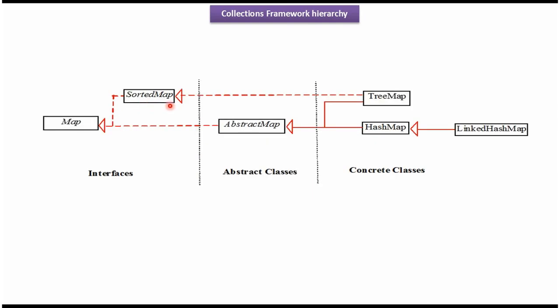SortedMapInterface extends MapInterface. AbstractMapClass implements MapInterface. TreeMapClass implements SortedMapInterface and extends AbstractMapClass. HashMapClass extends AbstractMapClass. LinkedHashMap extends HashMapClass. And this is about Collection Framework Hierarchy. Thanks for watching.